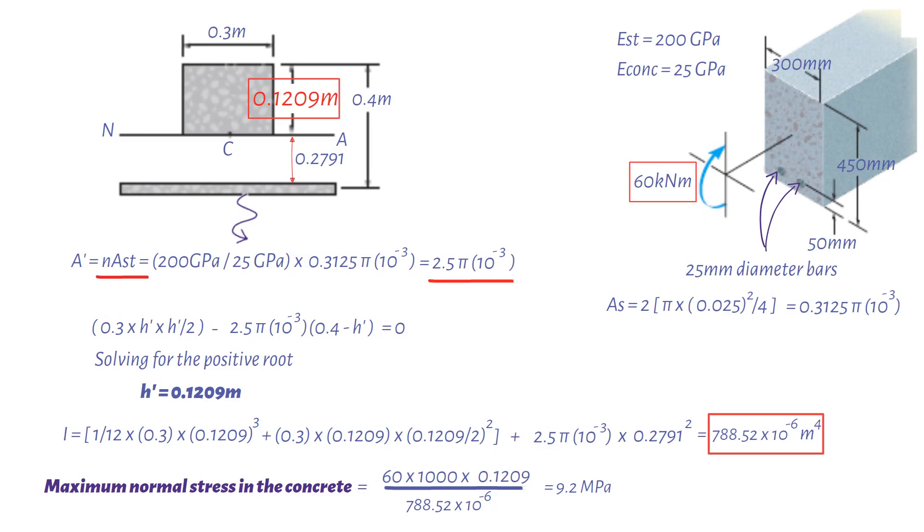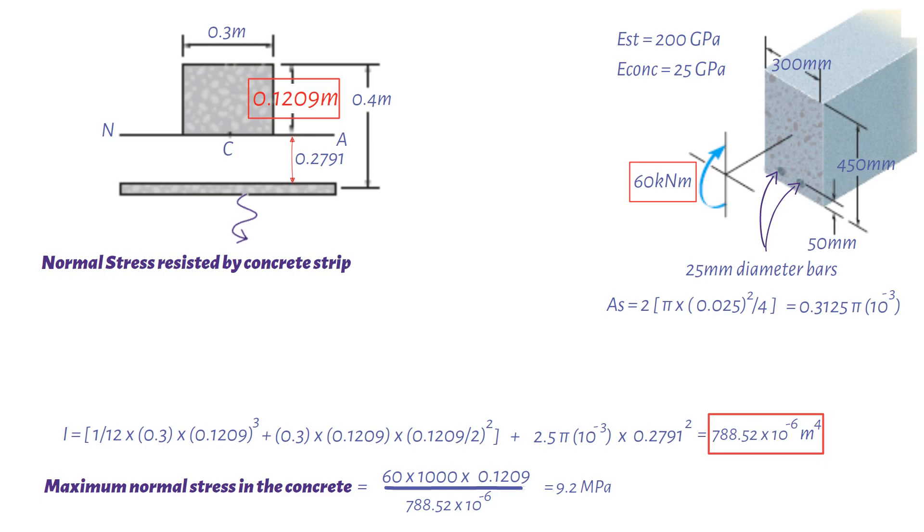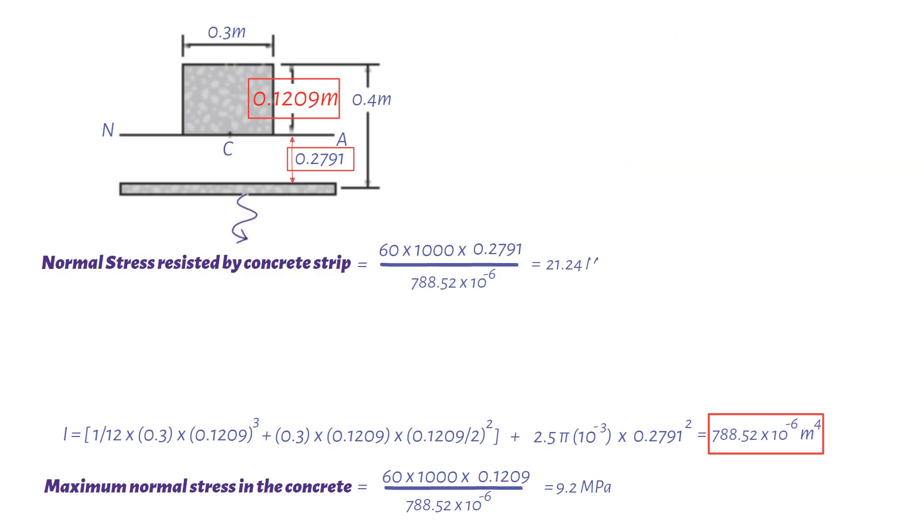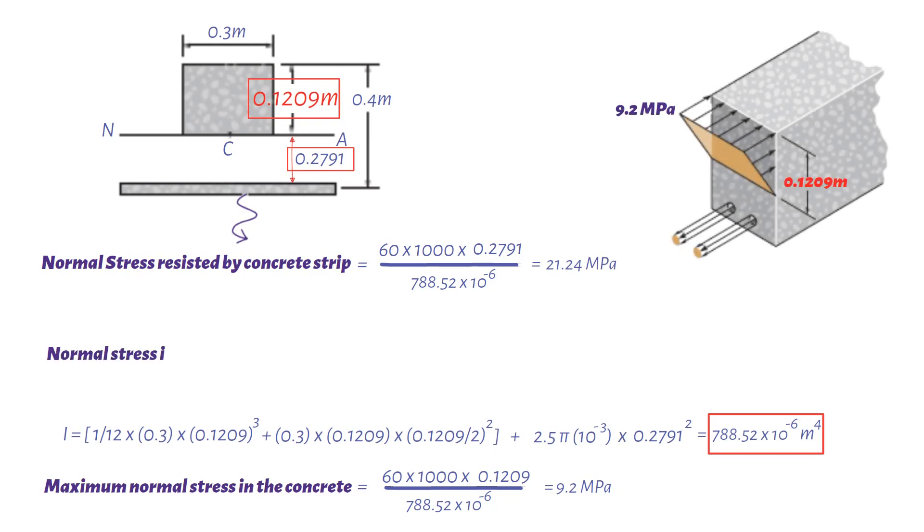Next, the normal stress resisted by the concrete strip that replaced the steel is 60 kilonewtons meters times 1000 times 0.2791 divided by the moment of inertia 788.52 times 10 to minus 6 meter to 4. This gives us a value of 21.24 newtons per square millimeters. Therefore, the normal stress in each of the two reinforcing rods is 200 divided by 25 times 21.24, giving us a value of 170 newtons per square millimeters.